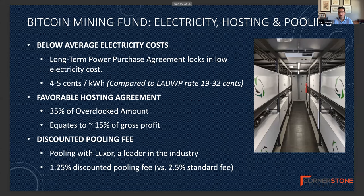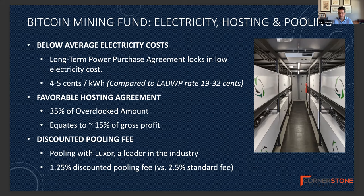Since we're entering into a one-megawatt project power purchase agreement, we're able to lock in very low electricity costs — between $0.04 to $0.05 per kilowatt hour. That's among the lowest rates in the country. Compare that to Los Angeles Department of Water and Power, which charges residents $0.19 to $0.32 per kilowatt hour. We've also negotiated a very favorable hosting agreement — the hosting company ensures the computers maintain their maximum operational capabilities to maximize our Bitcoin profit being generated.